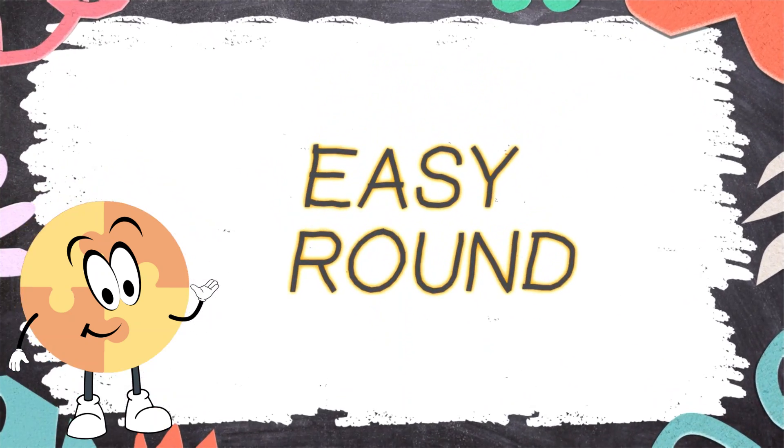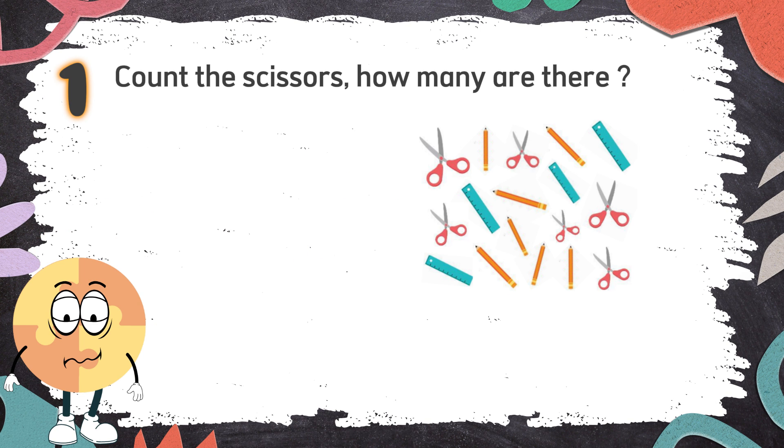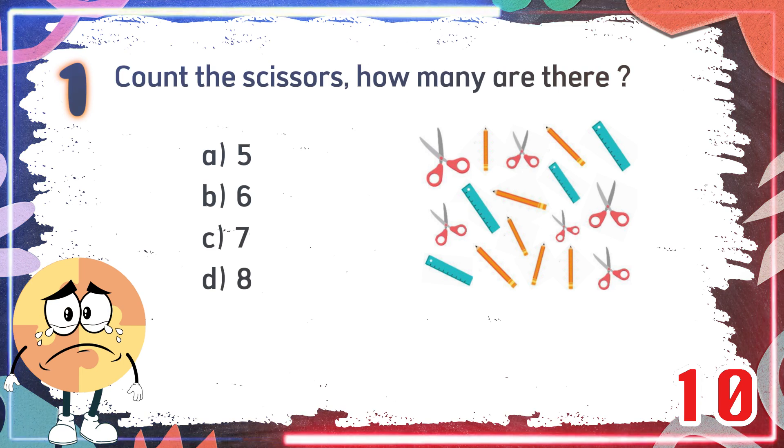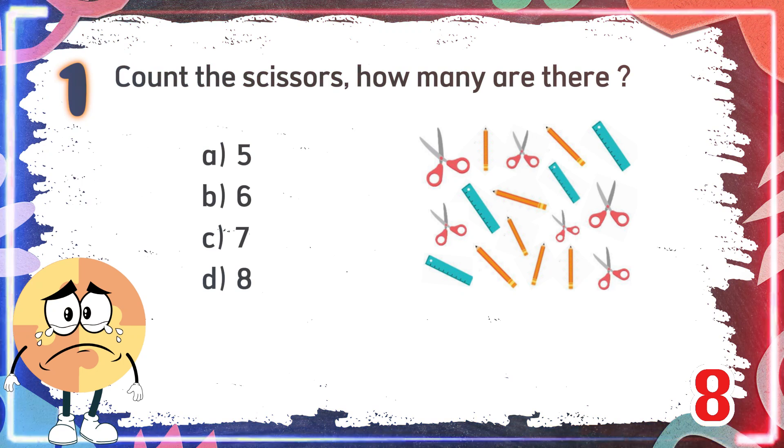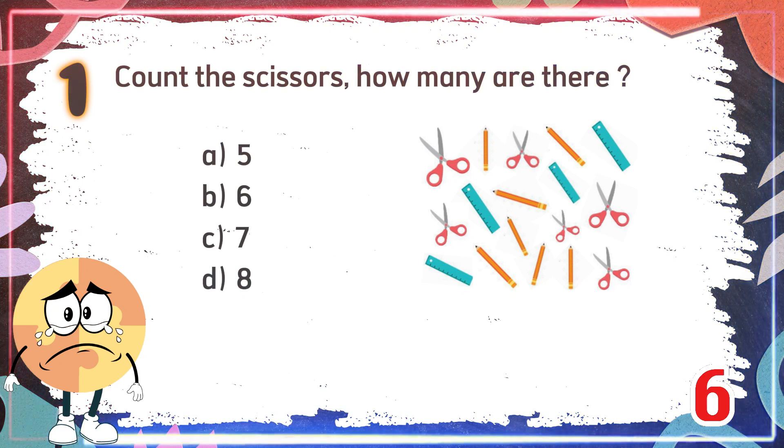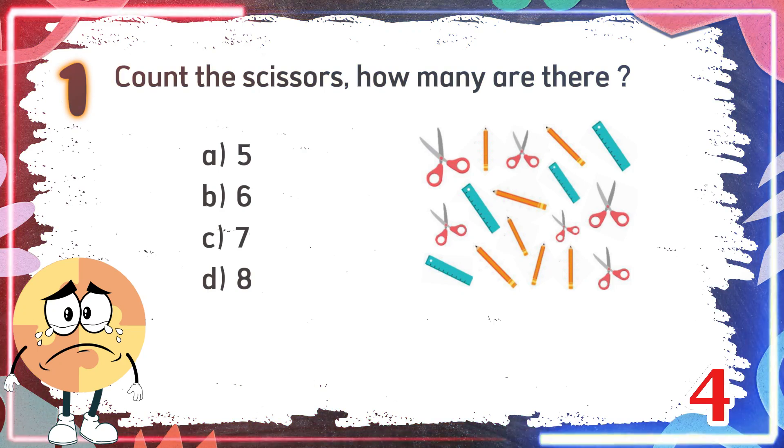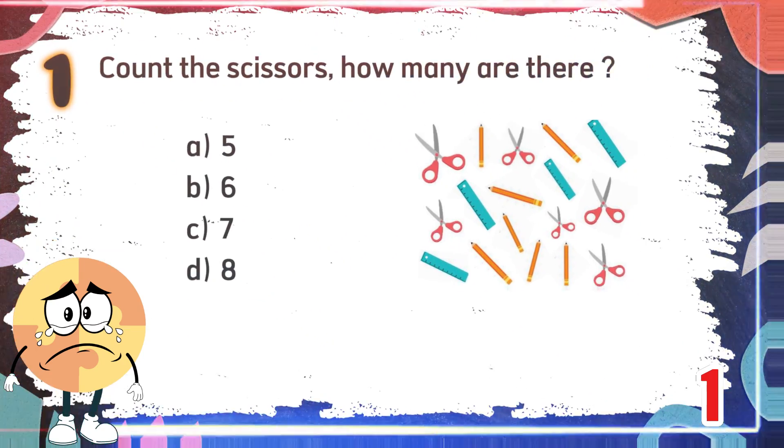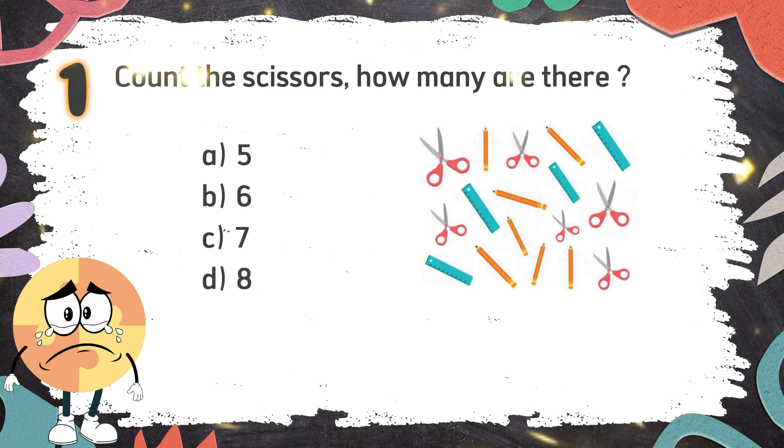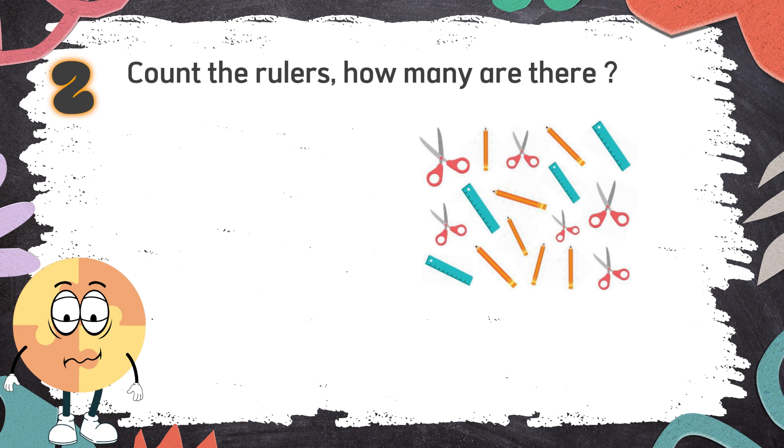Easy round. Number 1: Count the scissors. How many are there? The choices are A, 5, B, 6, C, 7, D, 8. The correct answer is B, 6.